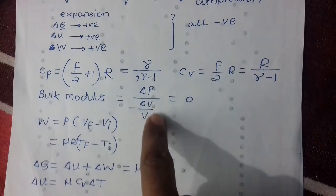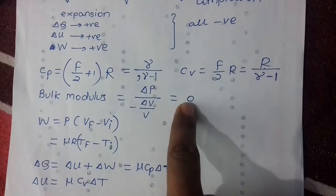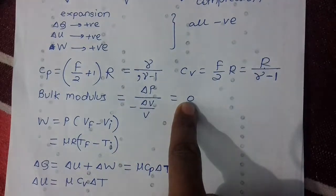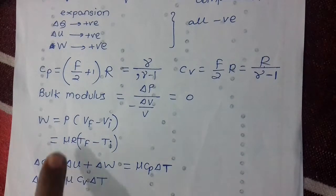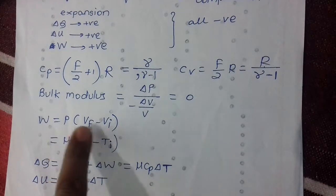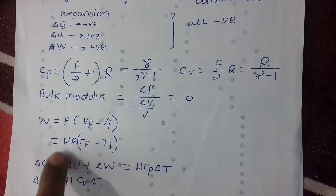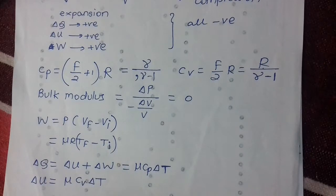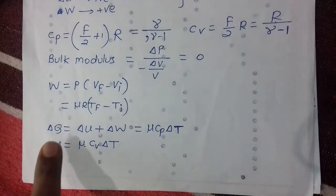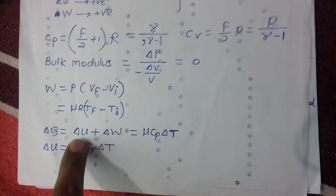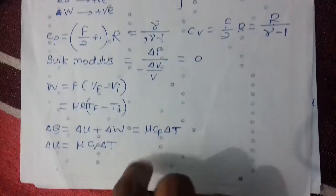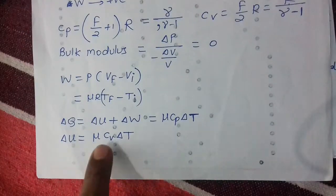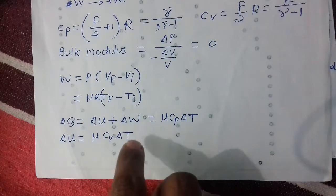For isobaric process, bulk modulus is zero because ΔP = 0. Since pressure is constant, it comes out of the integration, so work done = P(Vf − Vi) = μR(Tf − Ti). Therefore ΔQ = μCₚΔT, and ΔU = μCᵥΔT is always the internal energy formula.